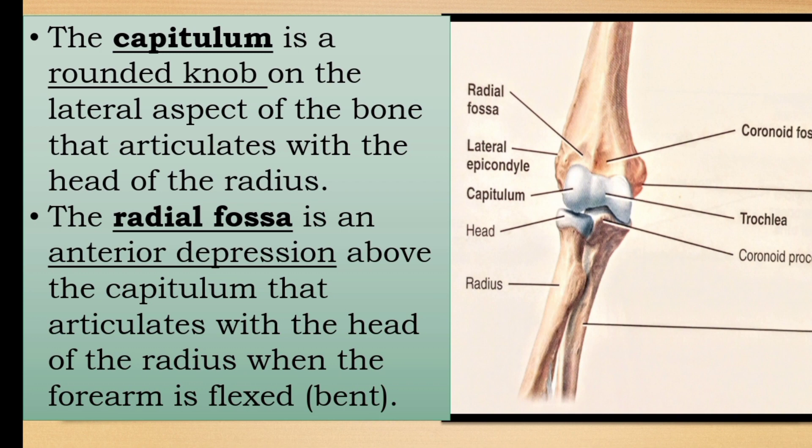At the distal end of the humerus there is a prominent structure called the capitulum. The word capitulum means head. It is a rounded knob on the lateral aspect of the bone that articulates with the head of the radius.